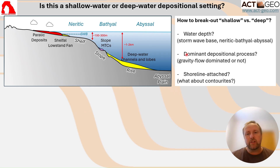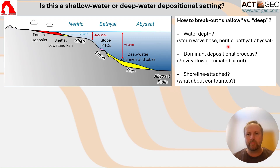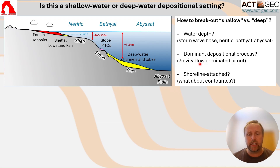Maybe it's something to do with your definition of storm wave base, or maybe you use water depth in the classical definition on continental slopes — the neritic, bathyal, and abyssal parts of a depositional profile. Very often we tend to use 'deep water' synonymous with the dominant depositional process being sediment gravity flow deposits — turbidites and debris flows and things like that. But that is really not a water depth thing; we can get those across a whole range of water depths, so just be careful with that.